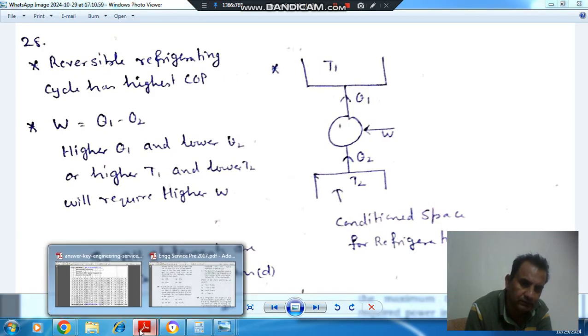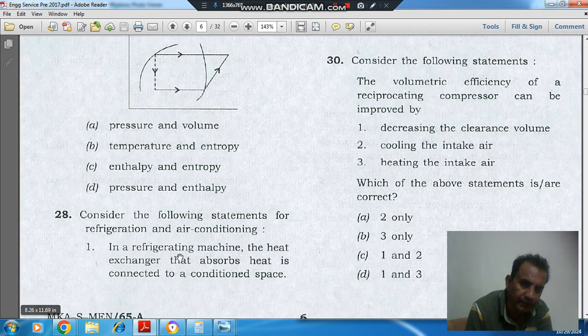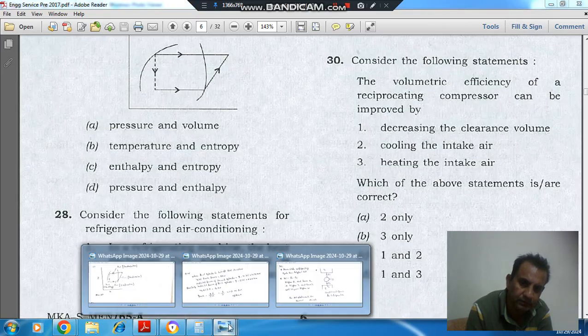So statement 1 is true. Statement 1 says: in a refrigeration machine, the heat exchanger that absorbs heat is connected to the conditioned space. That is absorbing heat connected to the conditioned space.